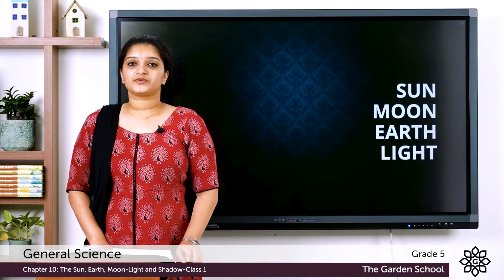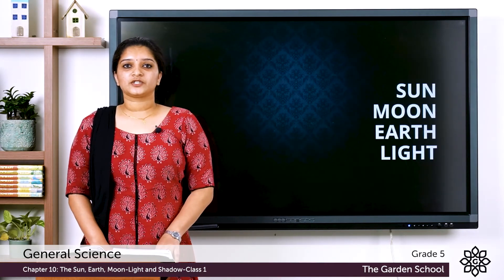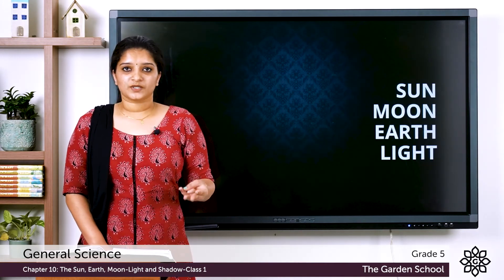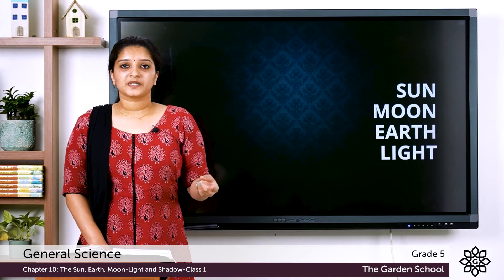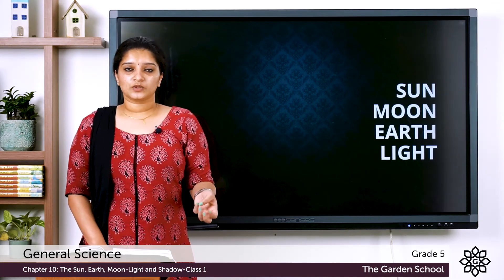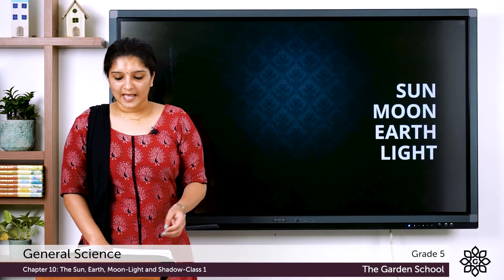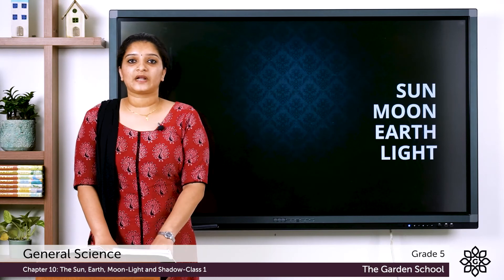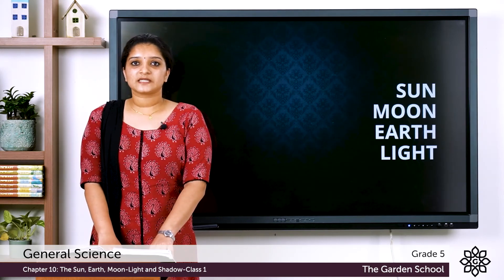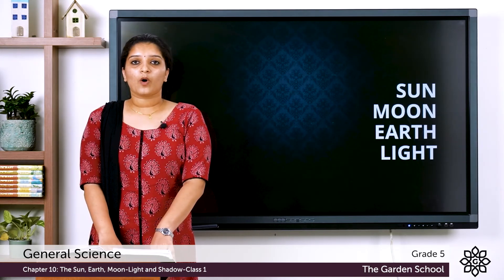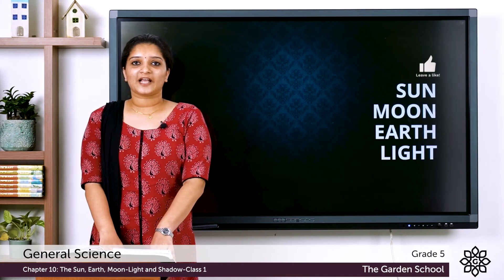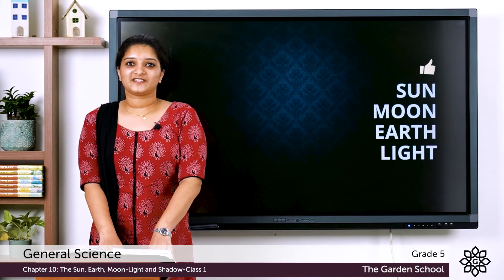That was all about today's class. In today's class we learned about the solar system, the sun, the earth, the moon, lunar phases and the property of light that is light travels in a straight line. I hope all the concepts were clear to you. Thank you and have a nice day.